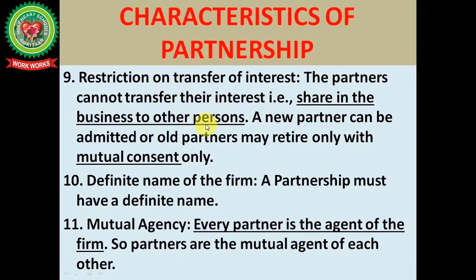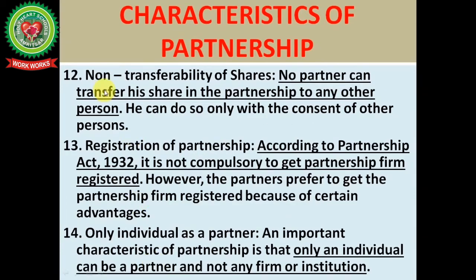A new partner can be admitted or an old partner may retire only with the mutual consent of all partners. Next is definite name of the firm — a partnership must have a specific name. Next is mutual agency — every partner is the agent of the firm and partners are mutual agents of each other. Non-transferability of shares — no partner can transfer his share to any other person without the consent of other partners.